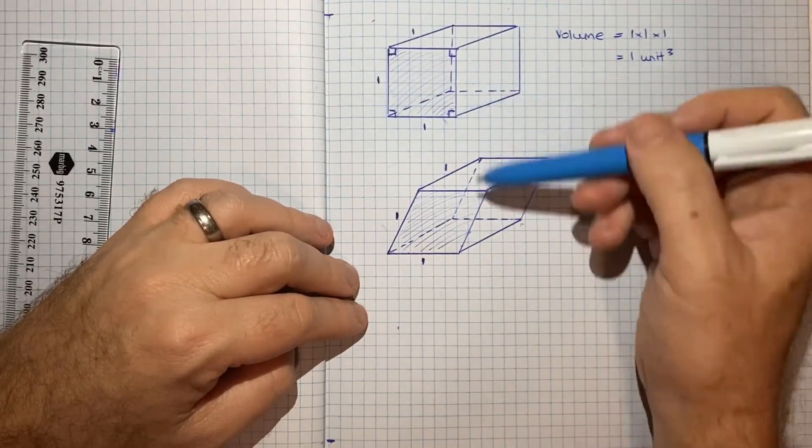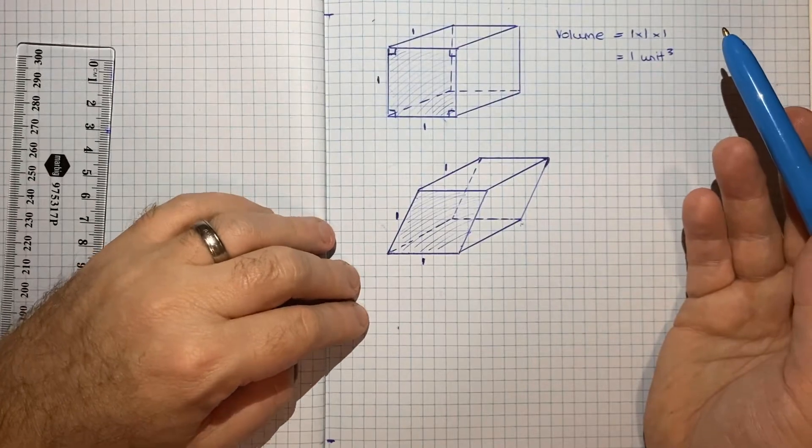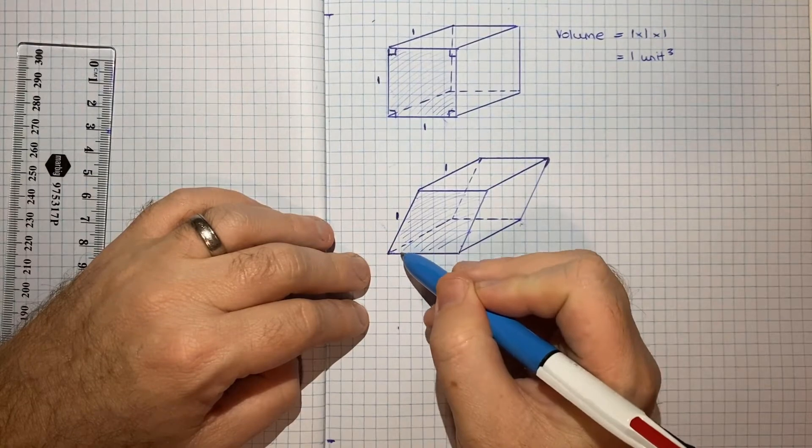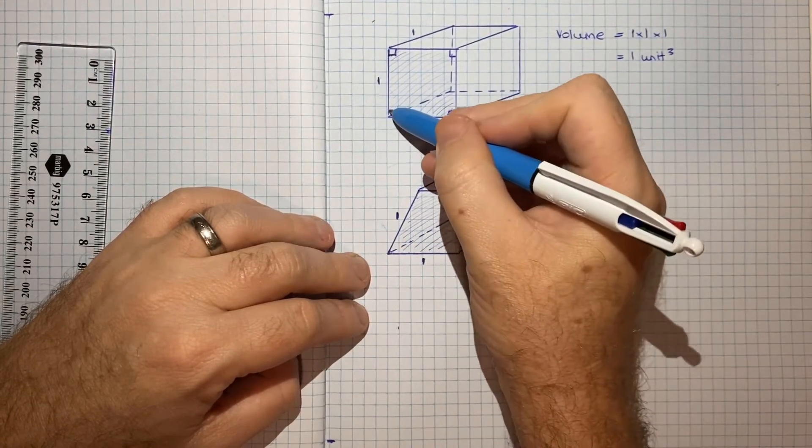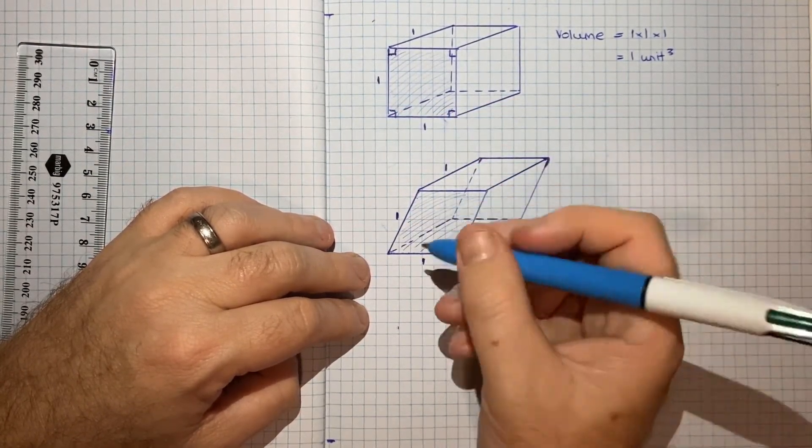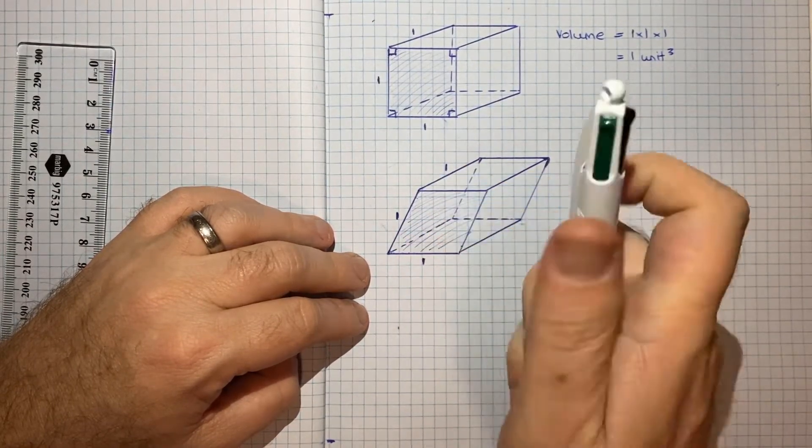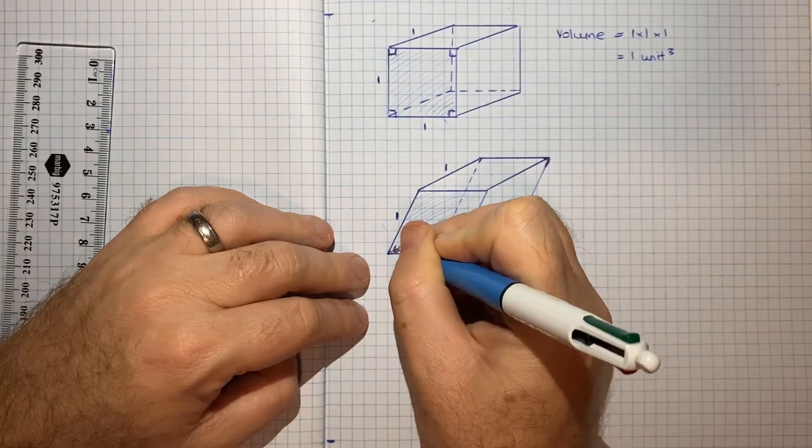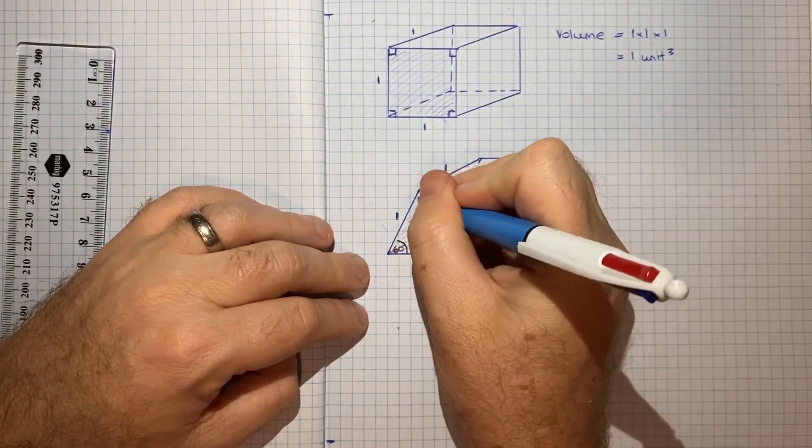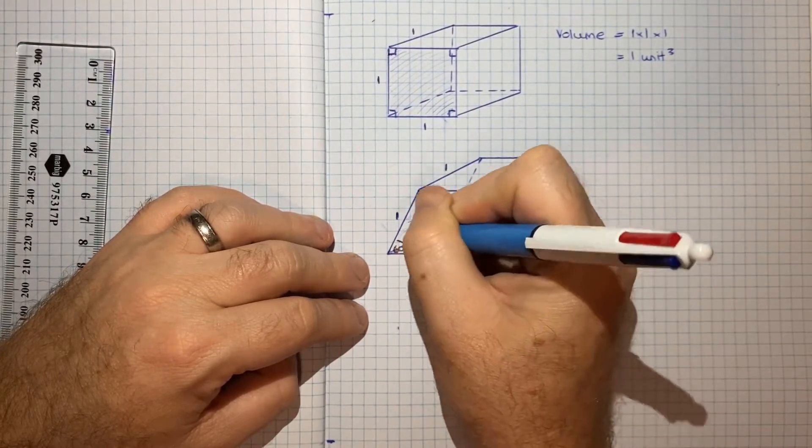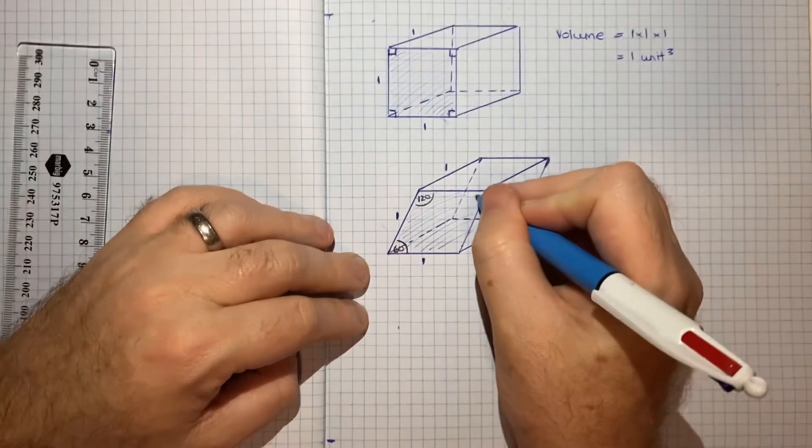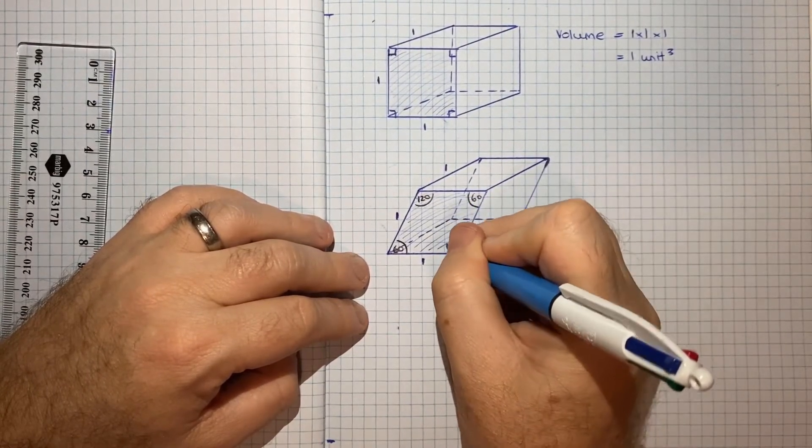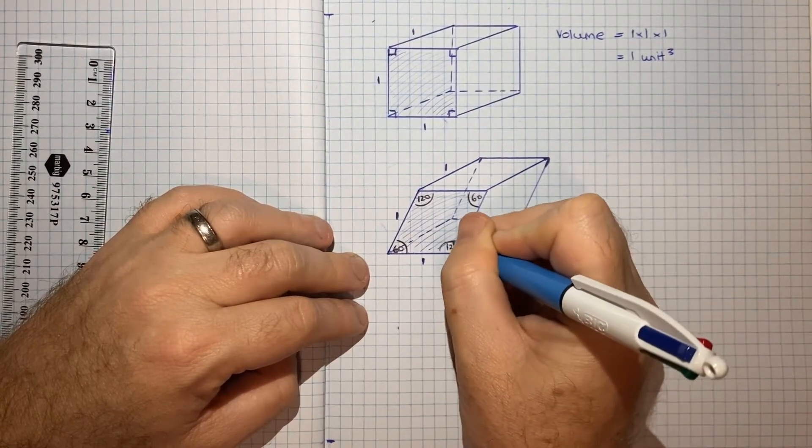So what we can do is we can just pick an angle. We know that this angle must be less than 90, because it's not going straight up. So I just picked an angle, let's call it 60 degrees, let's say, is this angle here, which means I know this would be 120, because these need to add up to 180, this would be 60, because these need to add up to 180, and then this would be 120, because these and these need to add up to 180.